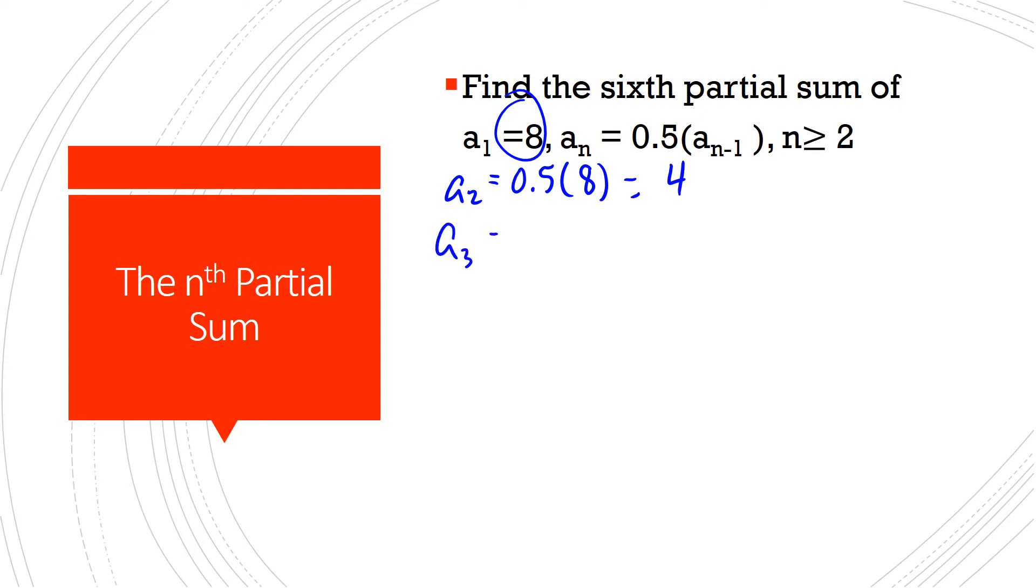Then a3. a3 is 0.5 times 4. So 1 half times 4 is 2. And a4 is 0.5 times 2, or 4 minus 1, the third term, a3. And that equals 1.